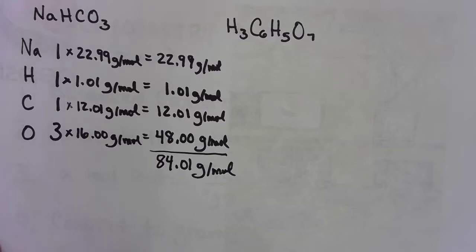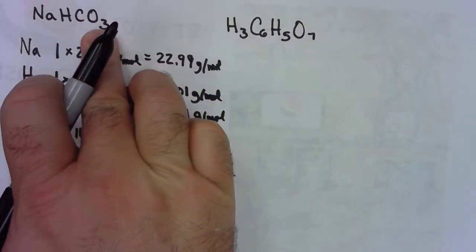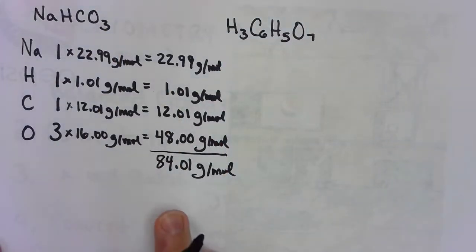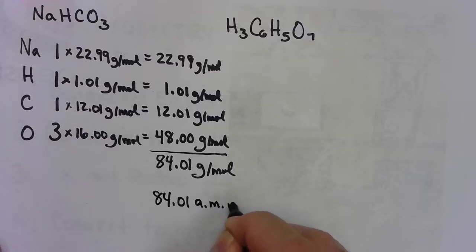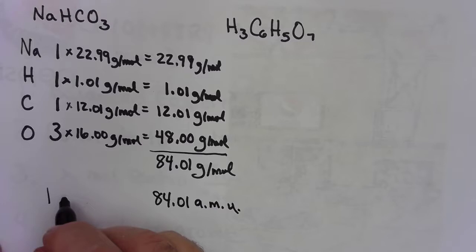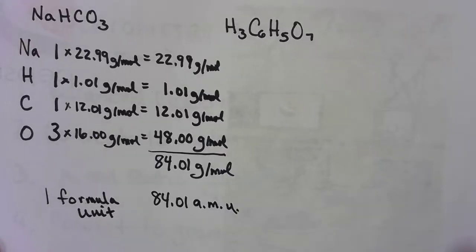But it works out pretty good for me. If we were doing just one formula unit of the sodium bicarbonate, then instead of grams per mole, this would be 84.01 atomic mass units. That's for one formula unit. You might call it a molecule. You'd be wrong, but you might call it that.